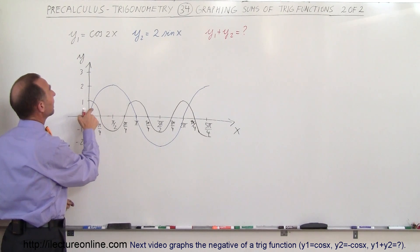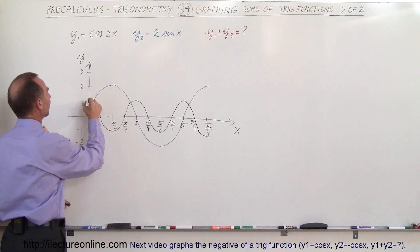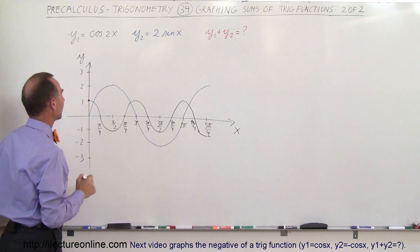Notice when the angle is 0, the sine function is 0 and the cosine function is 1, so when we add 1 and 0 together, we get a point right there.